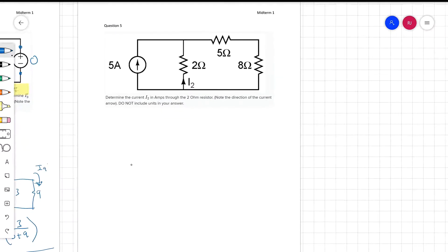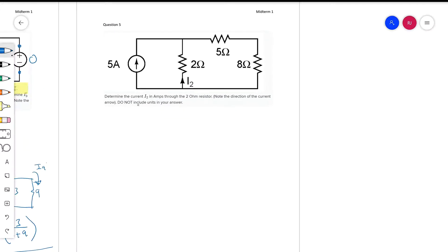We'll now move on to question 5. In here it says, determine the current I2 in amps through this 2-ohm resistor. Note the direction of the current. Do not include units in your answer.